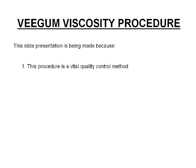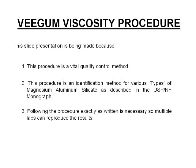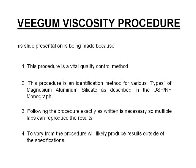This slide presentation is being made because: 1. The procedure is a vital quality control method. 2. This procedure is an identification method for various types of magnesium aluminum silicate, as described in the USPNF monograph. 3. Following the procedure exactly as written is necessary so multiple labs can reproduce the results. 4. If a tester varies from the procedure, he or she will produce results which will lead to an erroneous conclusion that the material does not meet specifications.